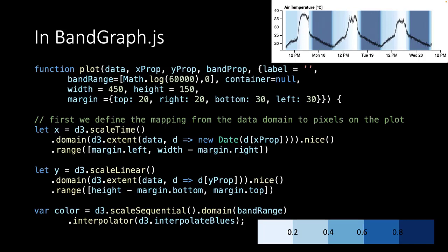We supply it with all the data, the property for the X axis, which is date time, the property for the Y axis, which is air temperature, and a property for the color band, which is the ambient light. We supply it with a default range for the band, and also default values for the width and the height of the canvas, as well as certain margins.